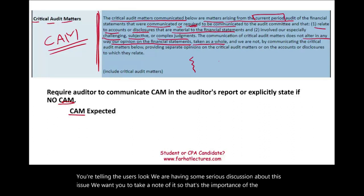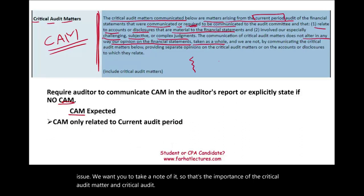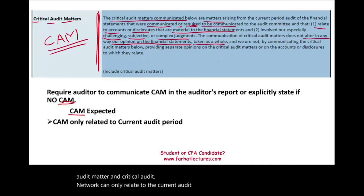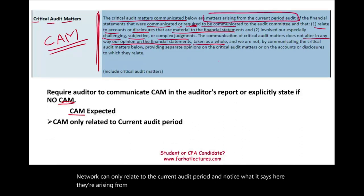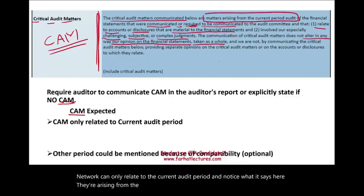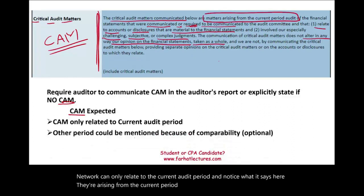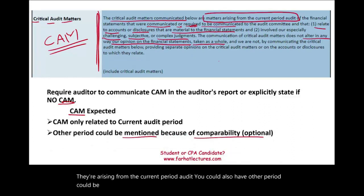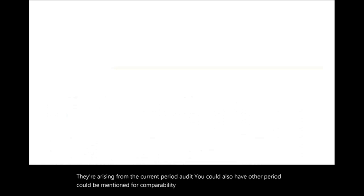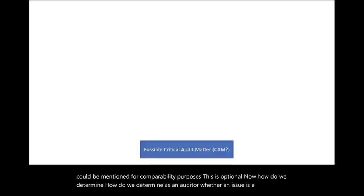Critical audit matters can only relate to the current audit period — they arise from the current period audit. You could also mention other periods for comparability purposes, but this is optional. Now, how do we determine as an auditor whether an issue is a critical audit matter or not?